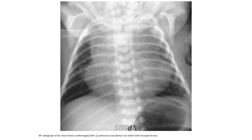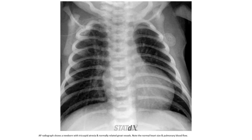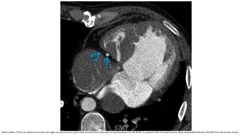AP radiograph of the chest shows cardiomegaly with decreased pulmonary vascularity in an infant with tricuspid atresia. Another AP radiograph shows a newborn with tricuspid atresia and normally related great vessels — note the normal heart size and diminished pulmonary blood flow. CTA in an adolescent shows the right coronary artery and fat between the right atrium and the right ventricle in a patient with tricuspid atresia, with unopacified blood in the right atrium from a patent shunt.